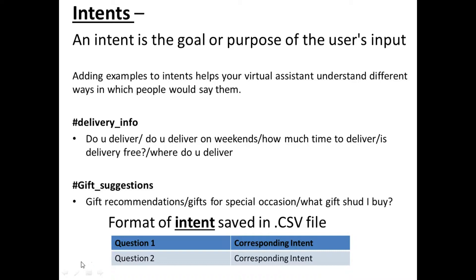For example, if the user makes queries like: do you deliver? Do you deliver on weekends? How much time do you take to deliver? Are the deliveries free? Where do you deliver? All of these queries are basically focusing on information regarding delivery — how the company provides delivery services. So we need to identify all the queries which actually reflect the intention of the user.